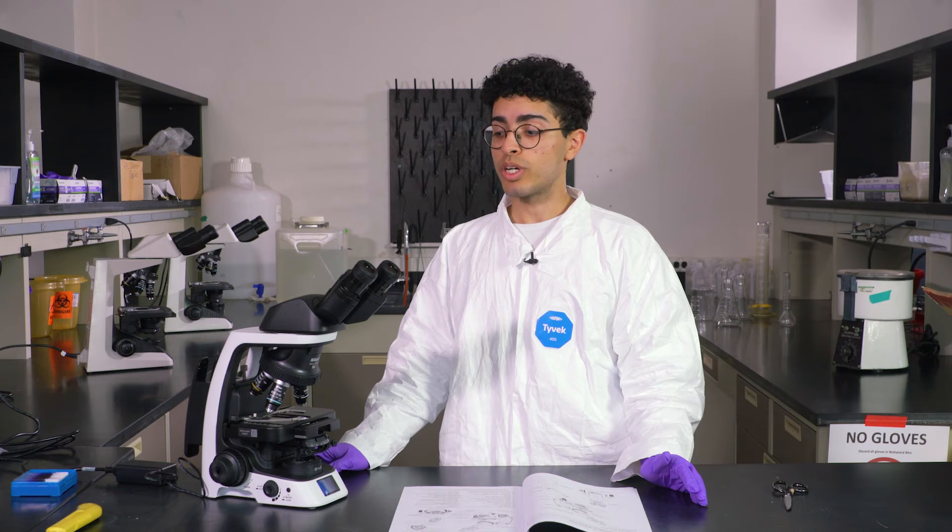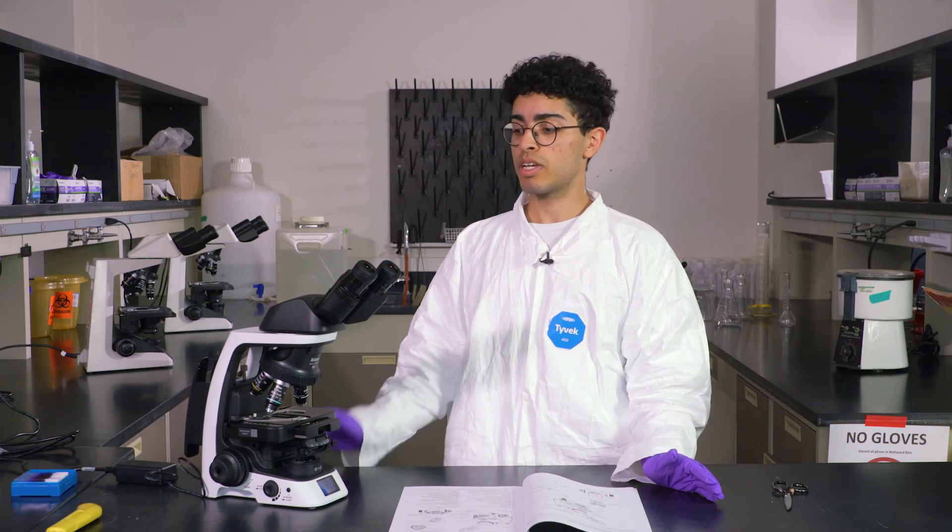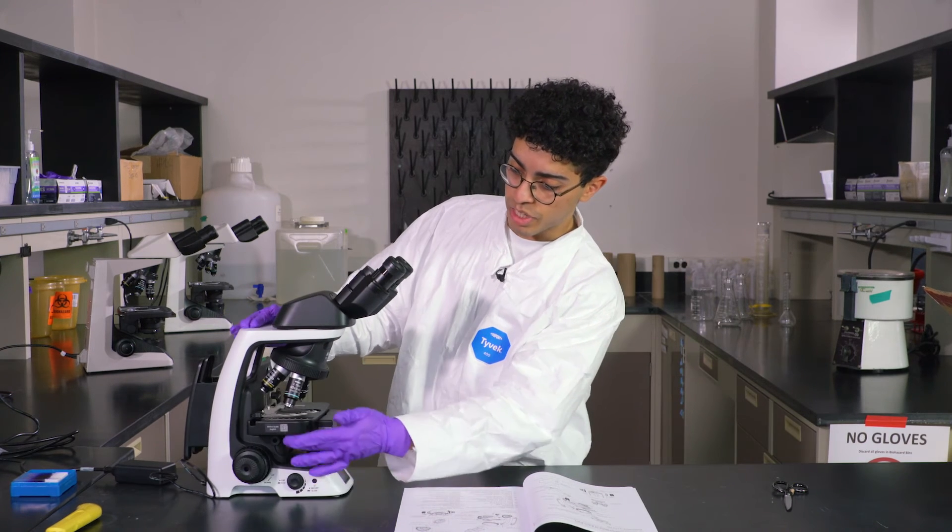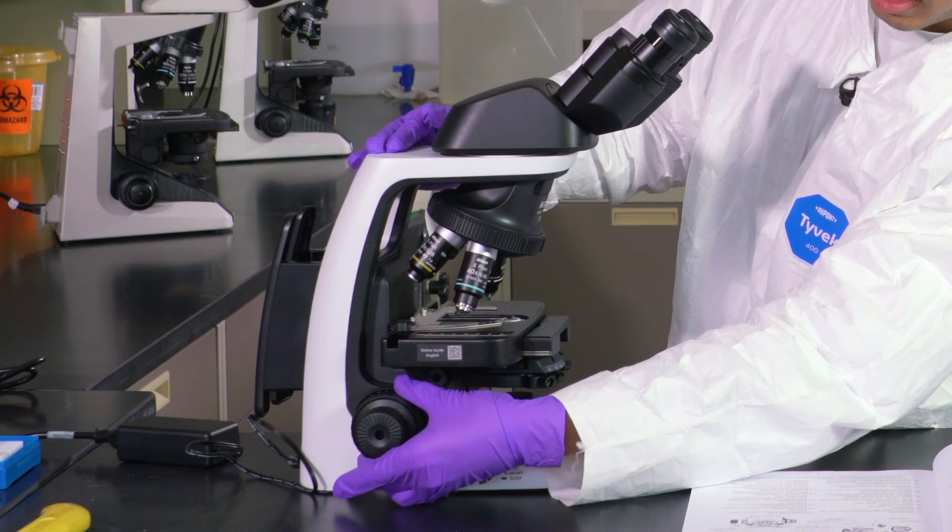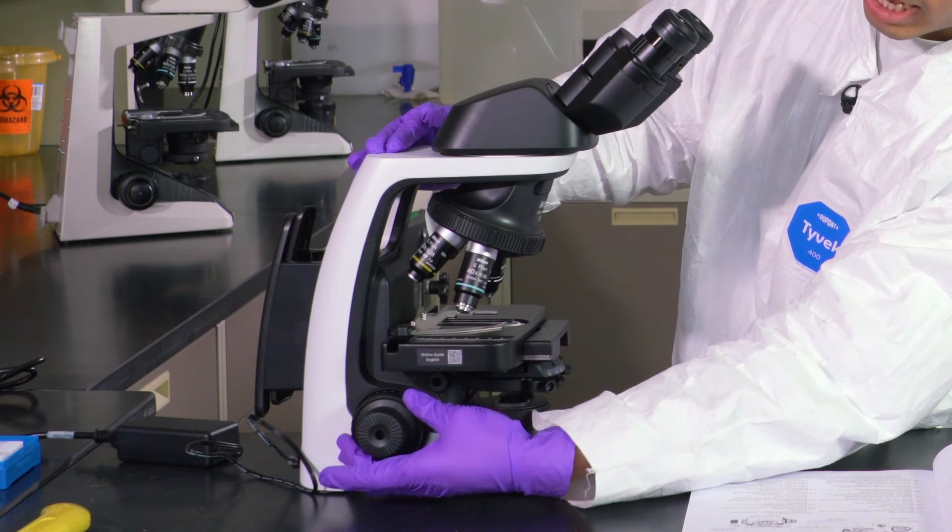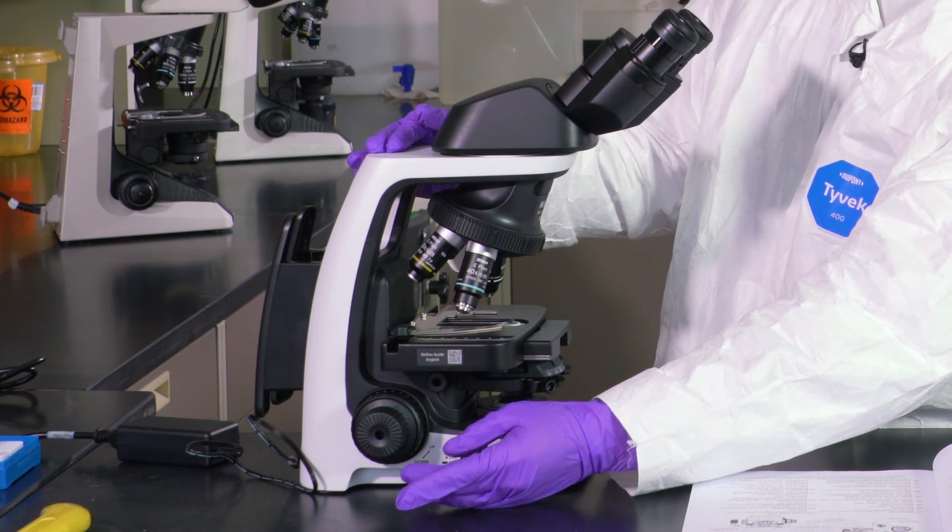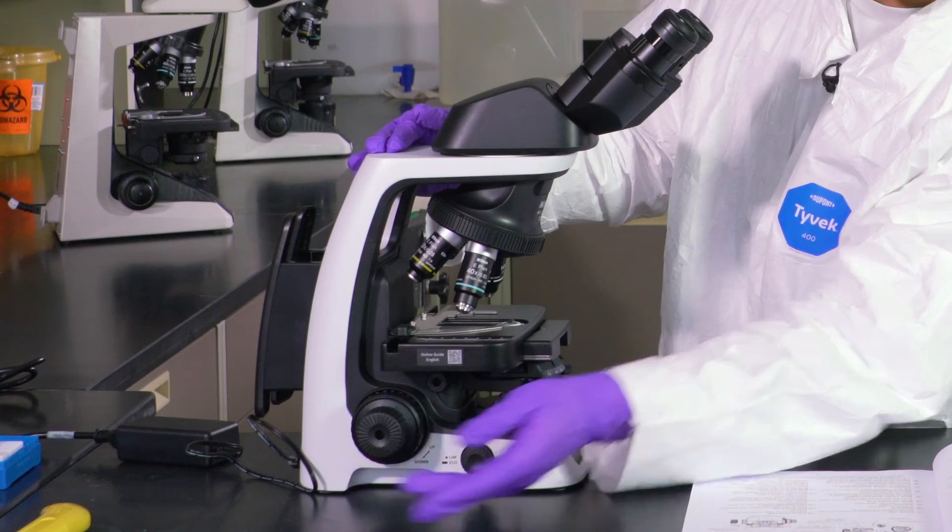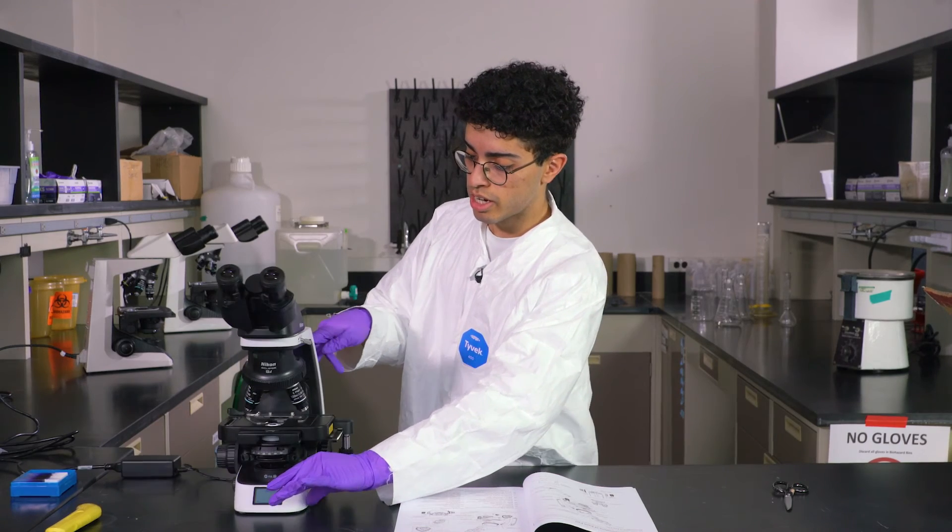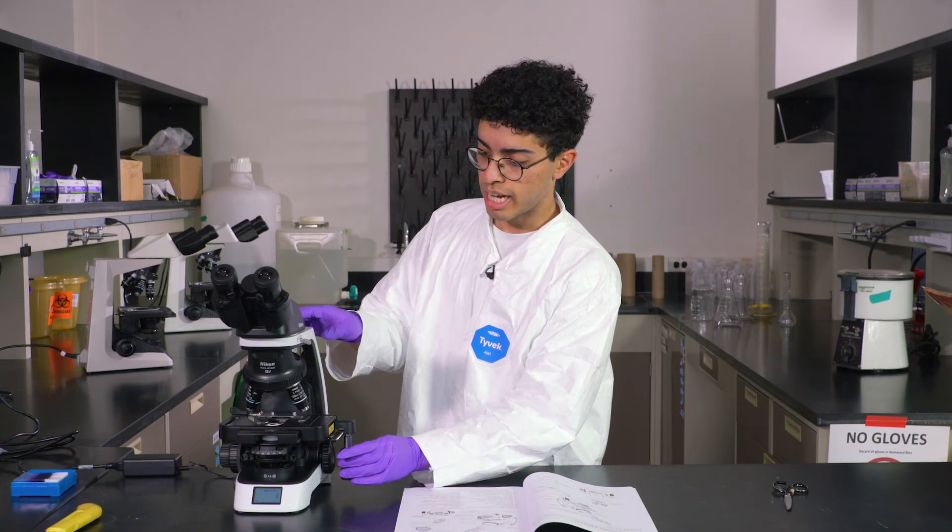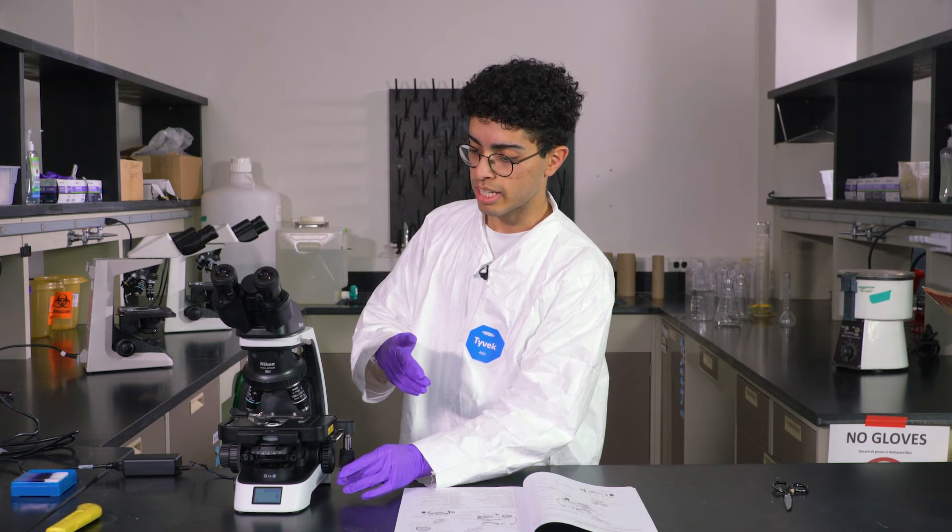So for gram staining, for example, in the microbiology courses, you do end up using all of them. This is the stage. It lifts and lowers with the slide. These are your adjusters, I guess. The coarse adjuster and the fine adjuster. And then over here, these get your slides to go up and back and left and right.